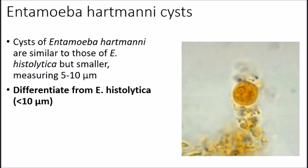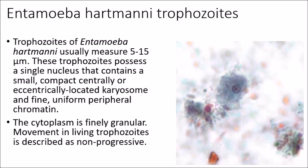Entamoeba hartmani cyst is very similar to E. histolytica; however, they're smaller, measuring about 5 to 10 microns. You can differentiate E. histolytica from E. hartmani based on size — if it's less than 10 microns, you're probably dealing with Entamoeba hartmani. The trophozoites usually measure about 5 to 15 microns and possess a single nucleus with a small, compact, centrally or eccentrically located karyosome, and fine, uniform peripheral chromatin. The cytoplasm is finely granular, and movement in living trophozoites is described as non-progressive.